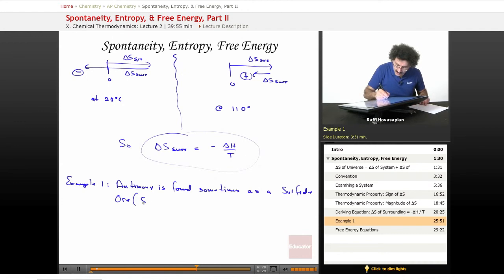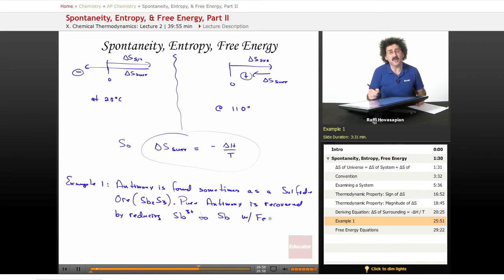And it is Sb2S3. Pure antimony is recovered by reducing the antimony ion in this ore to pure antimony metal with iron metal. We use iron to reduce it. Iron gets oxidized, and it becomes iron sulfide.